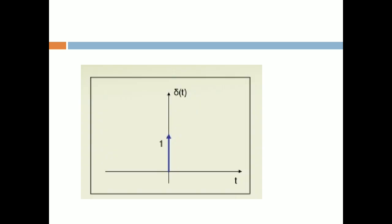The same mathematical expression can be shown in a diagram. The blue line indicates when t = 0, where the value is 1. On the rest of the axis the signal is 0 — indicating that when t ≠ 0, you get a value of 0. So everywhere it is 0 except at t = 0. That is the unit impulse function.